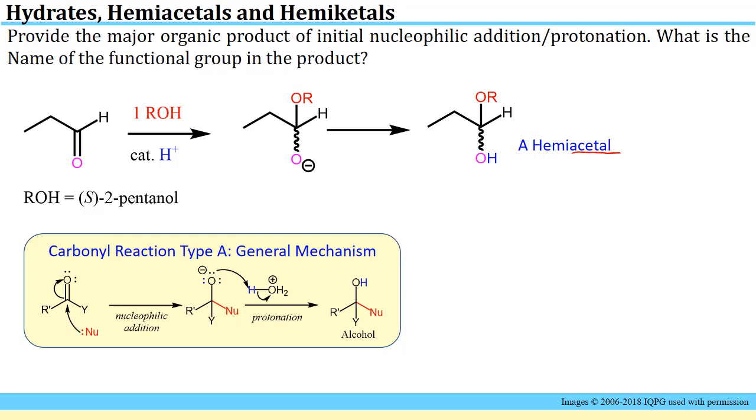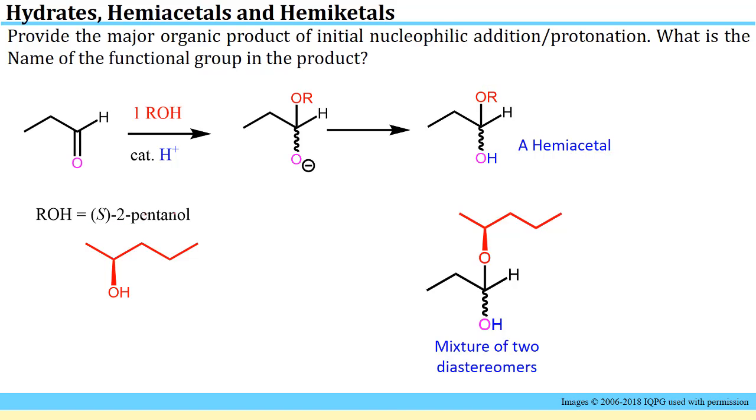Since the starting material was an aldehyde, we use acetal at the end instead of ketal. Now the final step is going to be to fill in the particular identity of this R group here. We can draw the S-2-pentanol out as we show here in red. If we identify that and draw it here where it was in the product, we see that will be how it will look in the product.